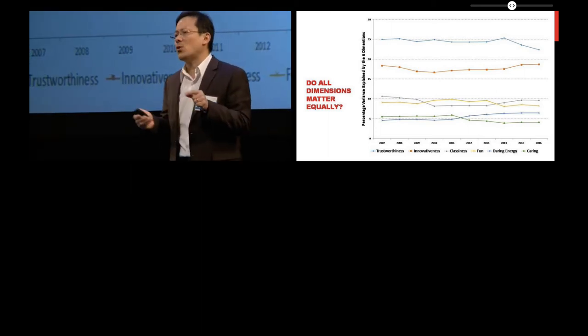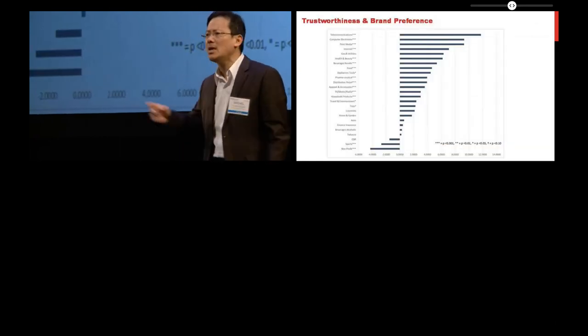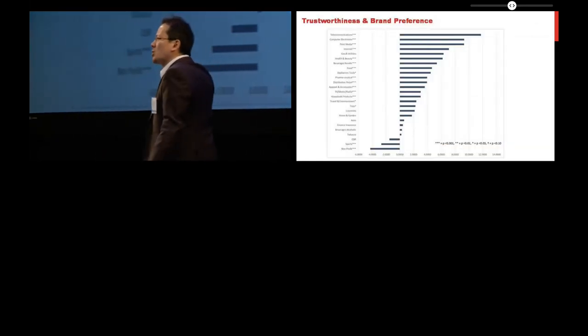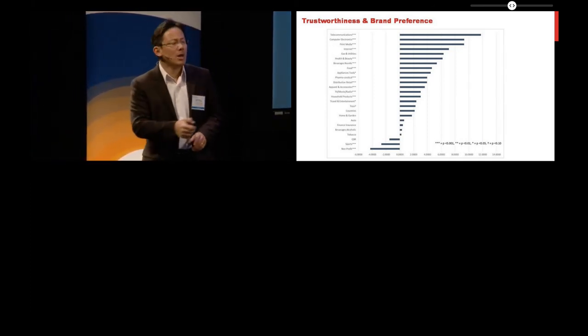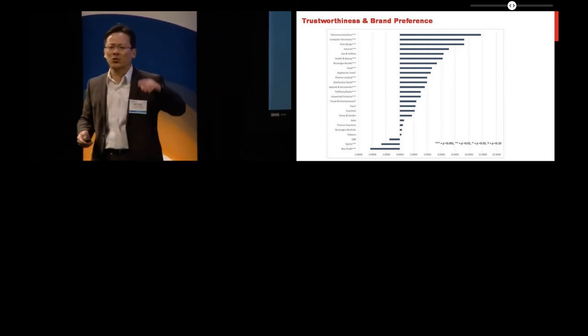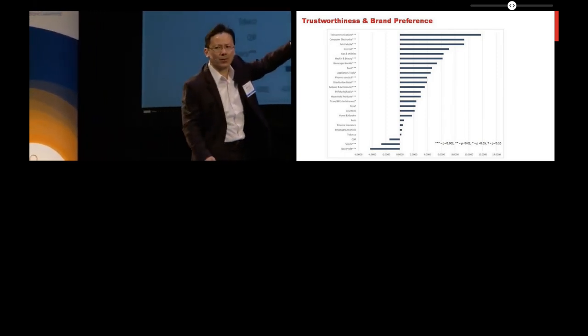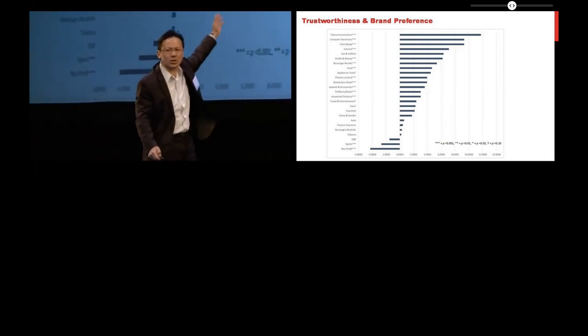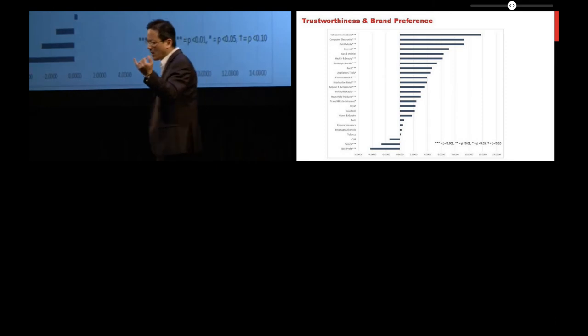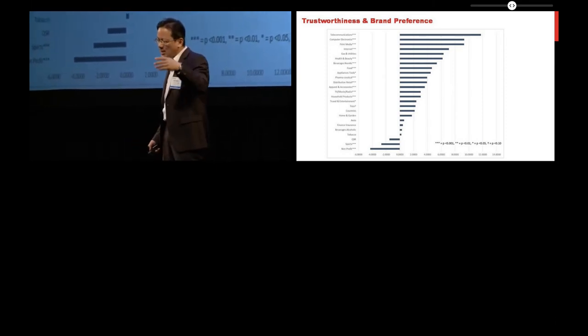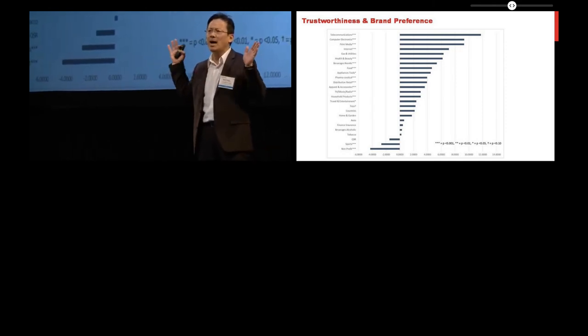Now you can look at this, of course, it's going to depend a little bit on the industry. So we can do the analysis and see how predictive are each of the dimensions of brand preference across different industries. And I'm not going to read the entire chart here, but for trustworthiness you can see that the more the bar to the right, the more it helps you in terms of brand preference. And you can see there's a lot of industries for which trustworthiness is going to help you a lot. Telecom will be one of them, computer electronics, print media, internet, gas utilities. Basically, all industries are going to be well served by having high trustworthiness.